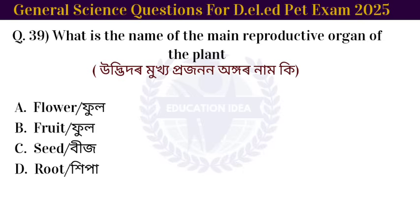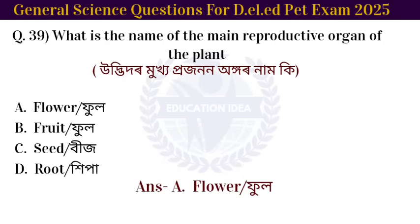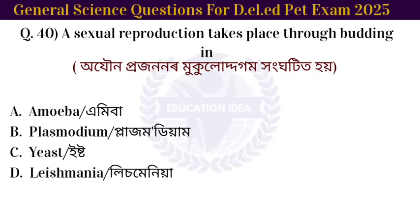Next question: what is the name of the main reproductive organ of the plant? Next question: asexual reproduction takes place through budding in yeast.